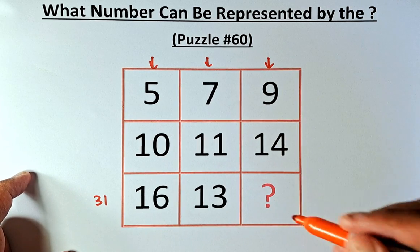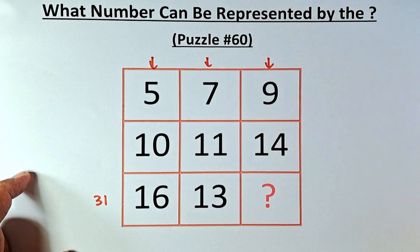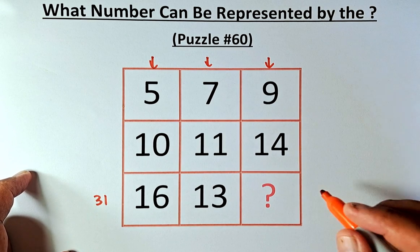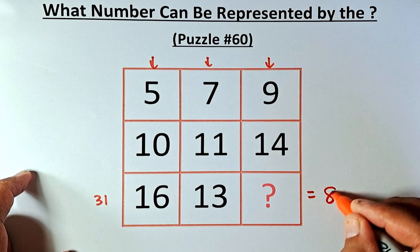So the last question mark, the total has to be added up to 31. So 9 plus 14 is 23. To get 31, the question mark has to be the number 8.